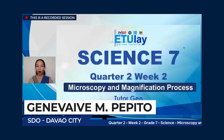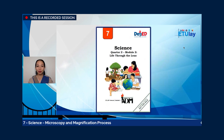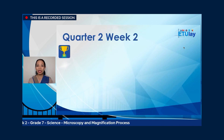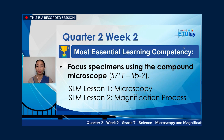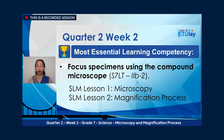Hello everyone. Welcome to DepEd E2Light Tutorial on TV. I am Tutor Jen, your tutor for Science 7 Quarter 2 Week 2. Today we will learn about Microscopy and Magnification Process. Our reference material for this week is the Central Office SLM from Quarter 2 Module 2 with the title 'Life Through the Lens,' from DepEd Soxogen Region. Our most essential learning competency is for learners to focus specimens using the compound microscope, code 7S7LT, Living Things in the Environment, Quarter 2 Week 2. The SLM is divided into two lessons: Lesson 1 on Microscopy and Lesson 2 on Magnification Process.